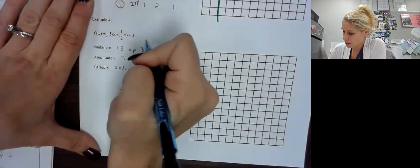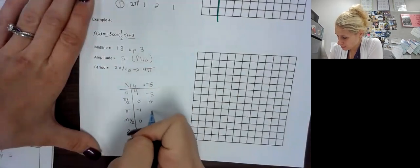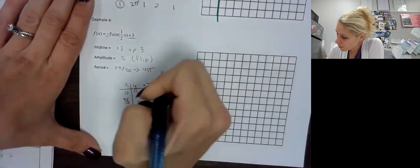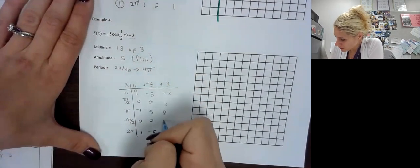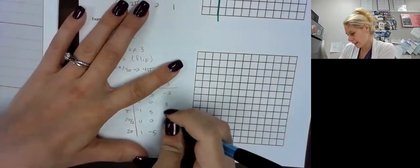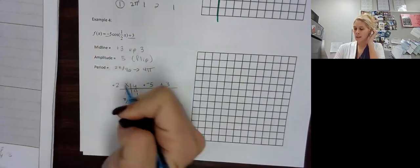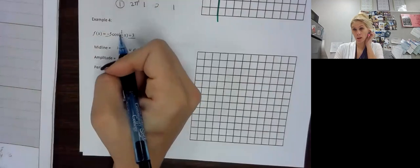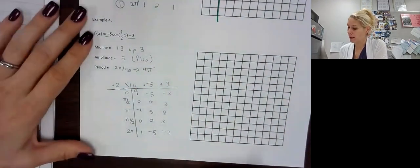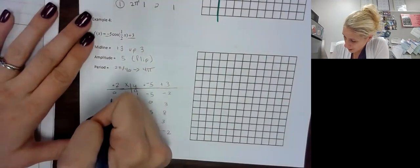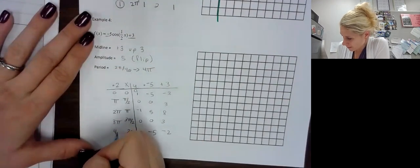We're multiplying by negative 5, giving us: negative 5, 0, 5, 0, negative 5. Then we add 3: negative 2, 3, 8, 3, and negative 2. For X, we divide by 1 half — same as multiplying by its reciprocal of 2 — giving us: 0, pi, 2 pi, 3 pi, and 4 pi. And there is our period of 4 pi.